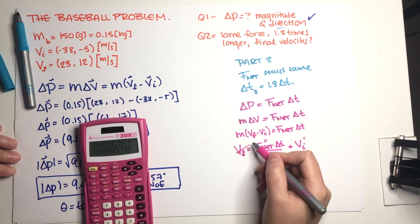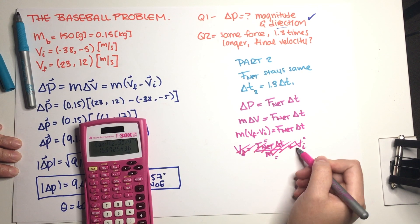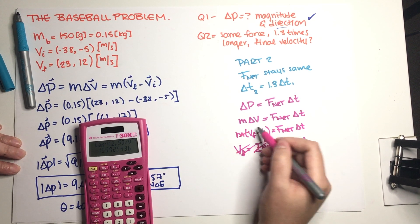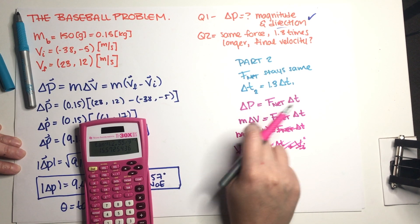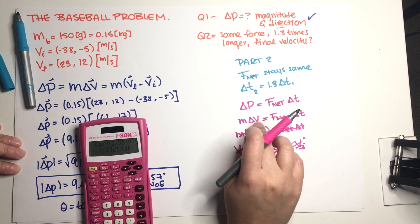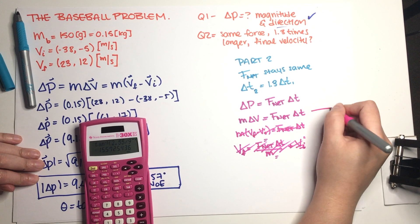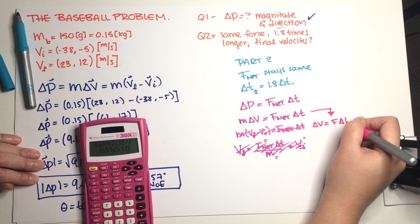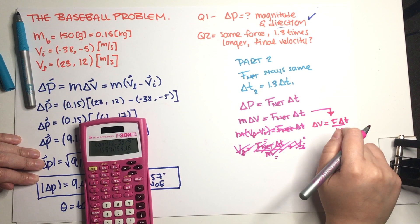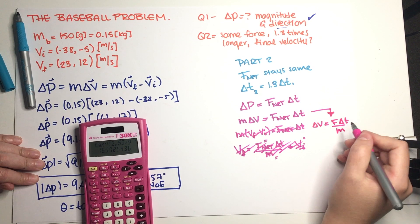So basically what we can do is just realize that, well you know what... yeah you know what, let's just not solve for delta p directly. I think it's going to be easier if we just go back over here. Yeah, let's just solve for delta v, this is going to be way easier, yeah.